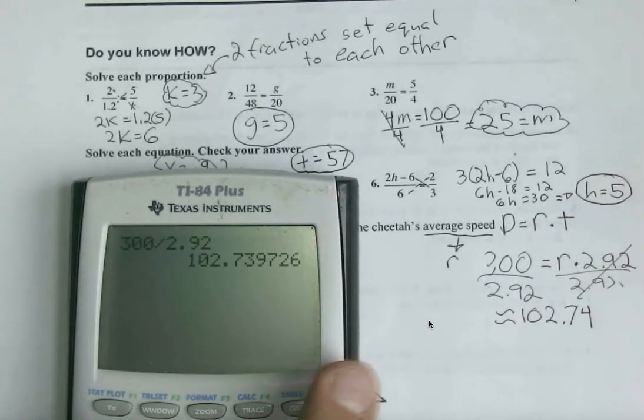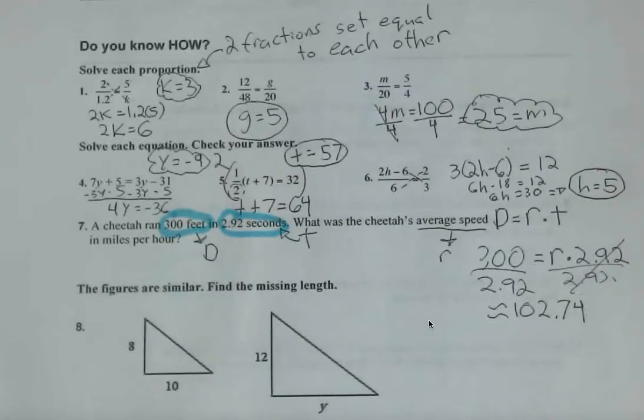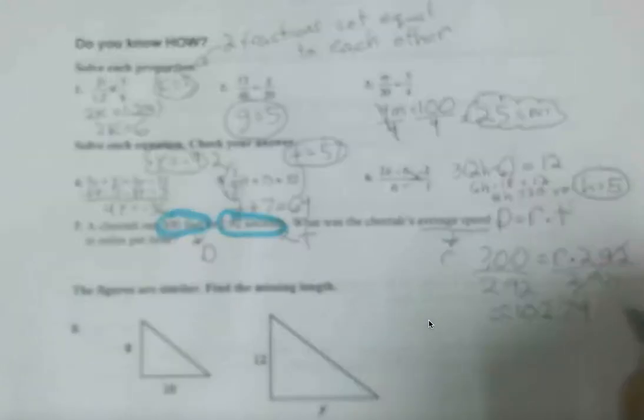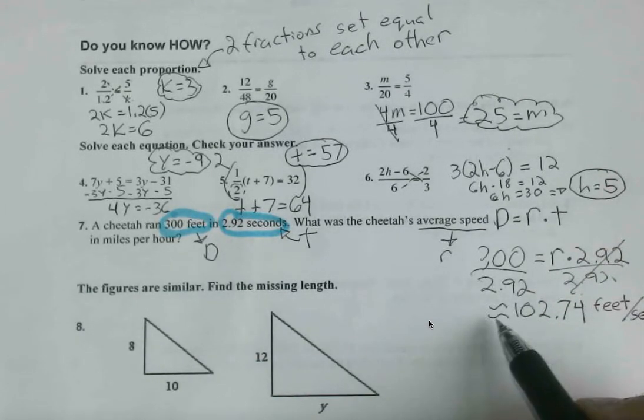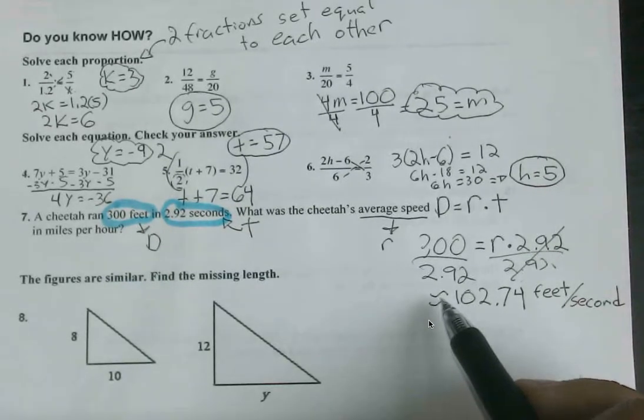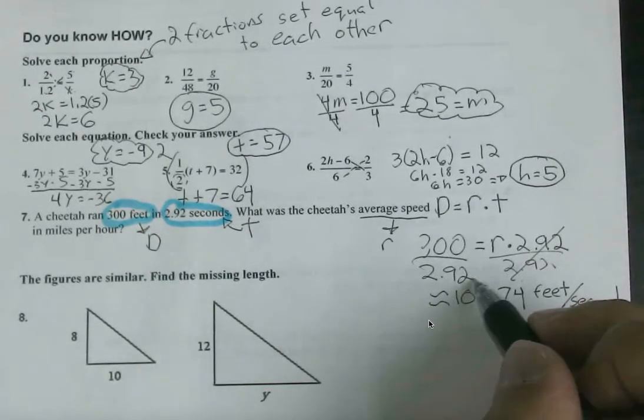But what units are going to make sense here? Would we want miles per hour, feet per minute, miles per minute? We should be treating this as feet per second. And I used this approximation, not quite the equal sign, because this was a decimal. So I'm just rounding accordingly.